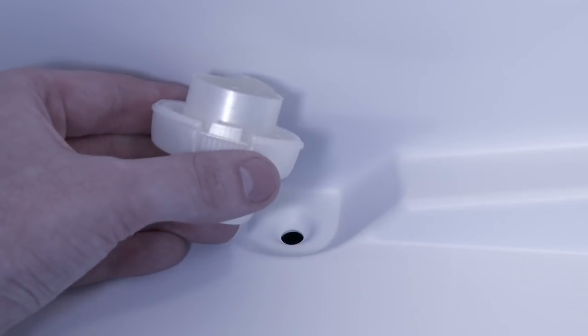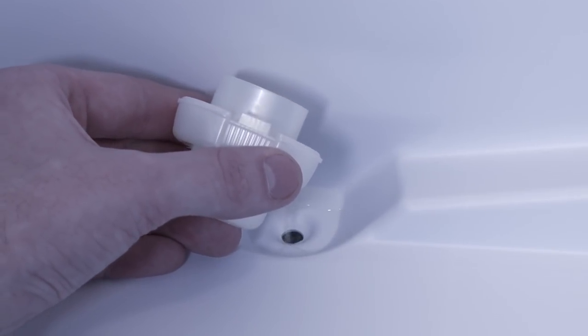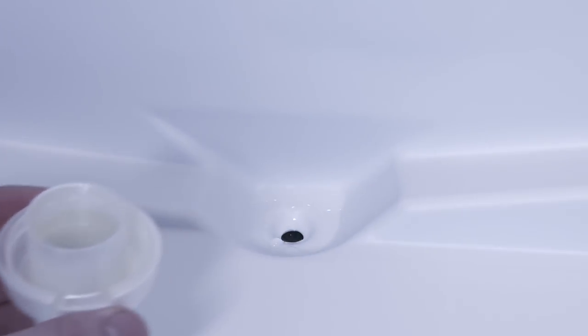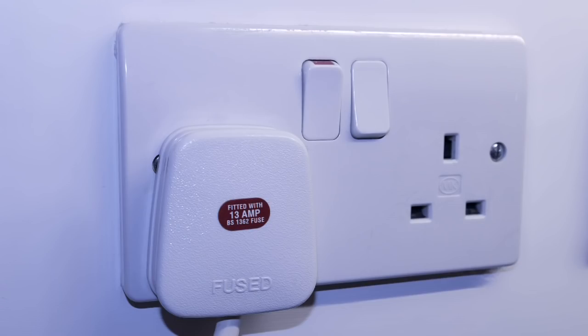When the hole is cleared, you can pour a small amount of mild sterilising fluid such as Milton down the hole to prevent further bacterial growth. Do not use bleach. Remember to turn the appliance back on when you have completed these steps.